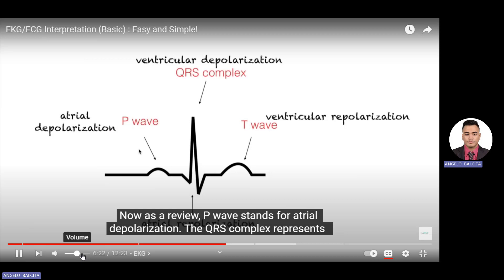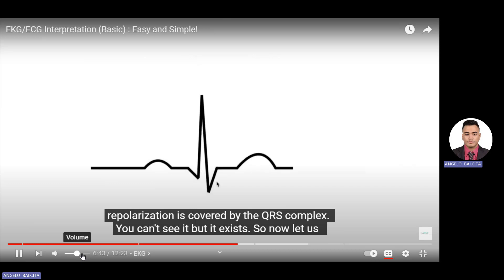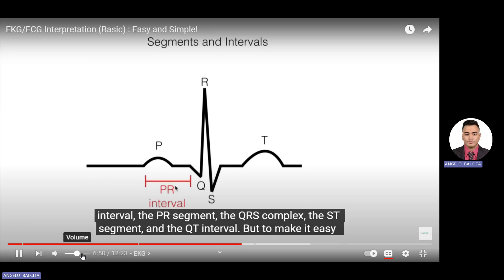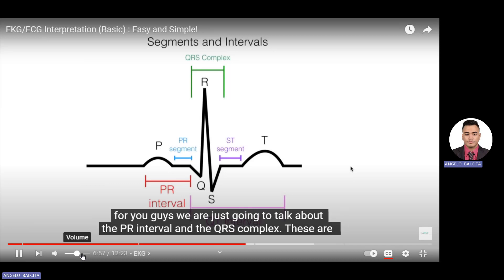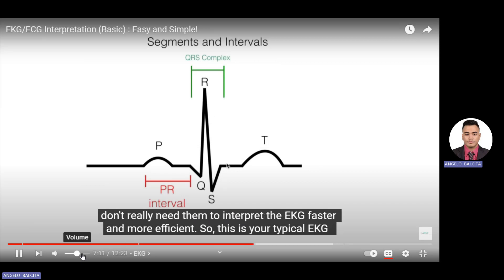As a review: the P wave represents atrial depolarization; the QRS complex represents ventricular depolarization; the T wave represents ventricular repolarization; and atrial repolarization is covered by the QRS complex — you can't see it, but it exists. Now let's talk about the segments and intervals in the EKG diagram. There are several, including the PR interval, PR segment, QRS complex, ST segment, and QT interval. We are going to focus on the PR interval and the QRS complex, as these are what we need to perform EKG interpretation.